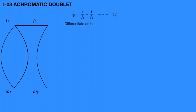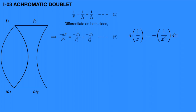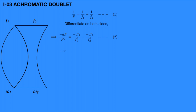Now differentiate the above equation on both sides. We get: −dF/F² = −df1/f1² − df2/f2², because the differentiation of 1/x gives −1/x² dx. Cancelling the minus sign on both sides, we write: dF/F² = df1/f1² + df2/f2². Assume this is equation 3.